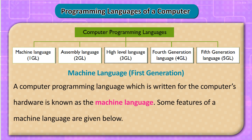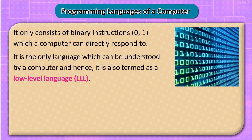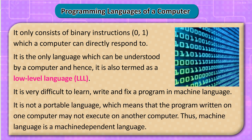Machine Language — 1st Generation: A computer programming language written for the computer's hardware is known as machine language. It only consists of binary instructions (0 and 1) which a computer can directly respond to. It is the only language understood by a computer, and hence is termed a low-level language (LLL). It is very difficult to learn, write, and fix. It is not a portable language, meaning a program written on one computer may not execute on another. Thus, machine language is a machine-dependent language.